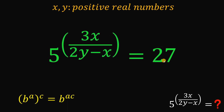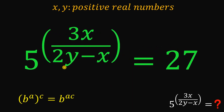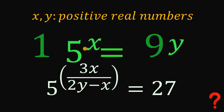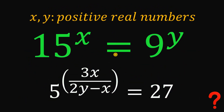Therefore, the numerical value of the expression 5 raised to the power of 3x over 2y minus x, given the equation 15 raised to the power of x equals 9 raised to the power of y, must be equal to 27. And as always, we are done.